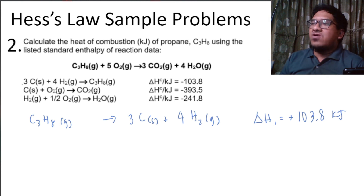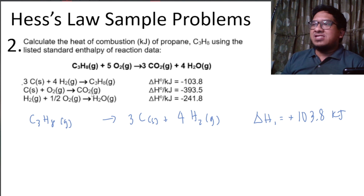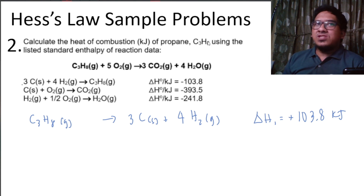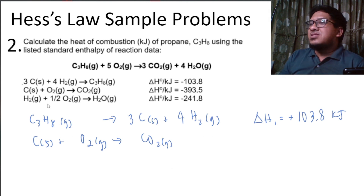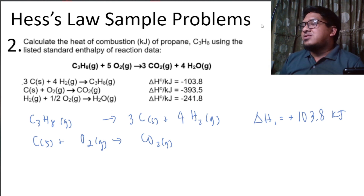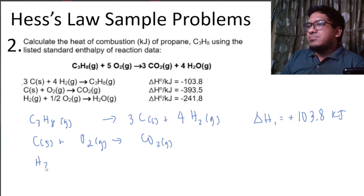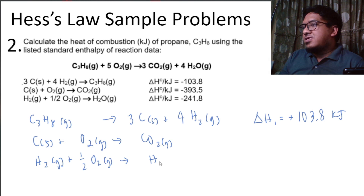For the second step reaction, oxygen is on the reactant side and carbon dioxide is on the product side, matching the overall reaction — so nothing to reverse. We copy it as: carbon reacts with oxygen gas to yield carbon dioxide. For the third step reaction, water vapor is on the product side, matching the overall reaction, so we copy it as: hydrogen gas plus one half mole of oxygen gas yields water vapor.